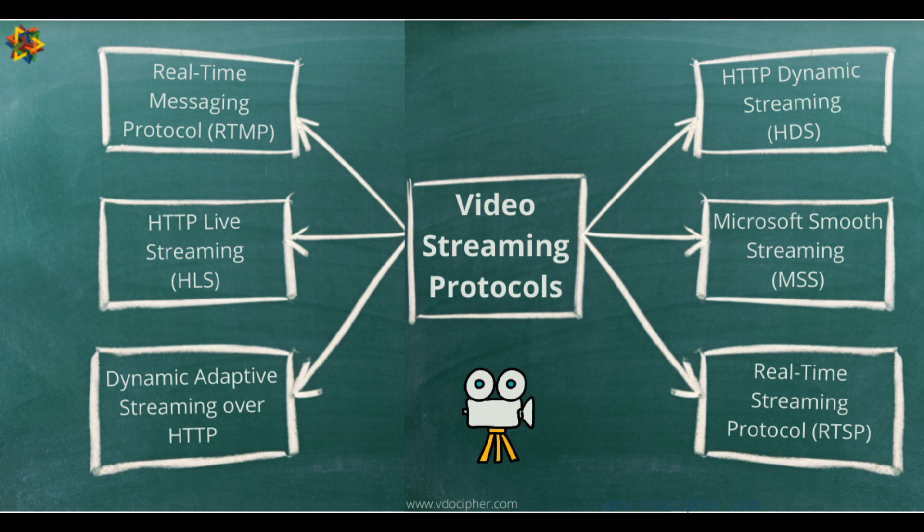The choice of protocol depends on various factors such as the device, platform, network conditions, and the specific requirements of the streaming application. HTTP-based adaptive streaming protocols, HLS and DASH, have gained significant popularity due to their flexibility, wide compatibility, and adaptive bitrate streaming capabilities.